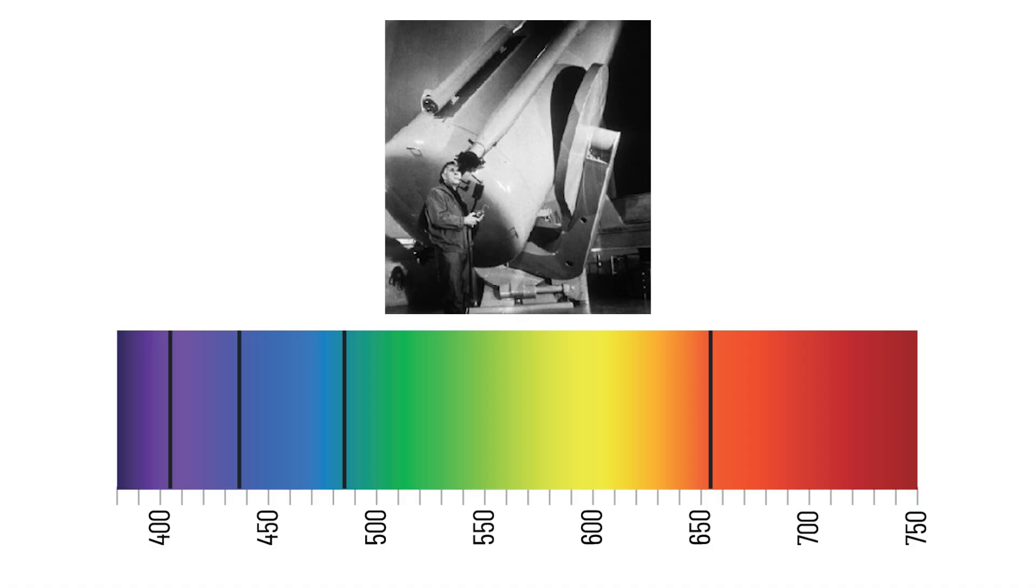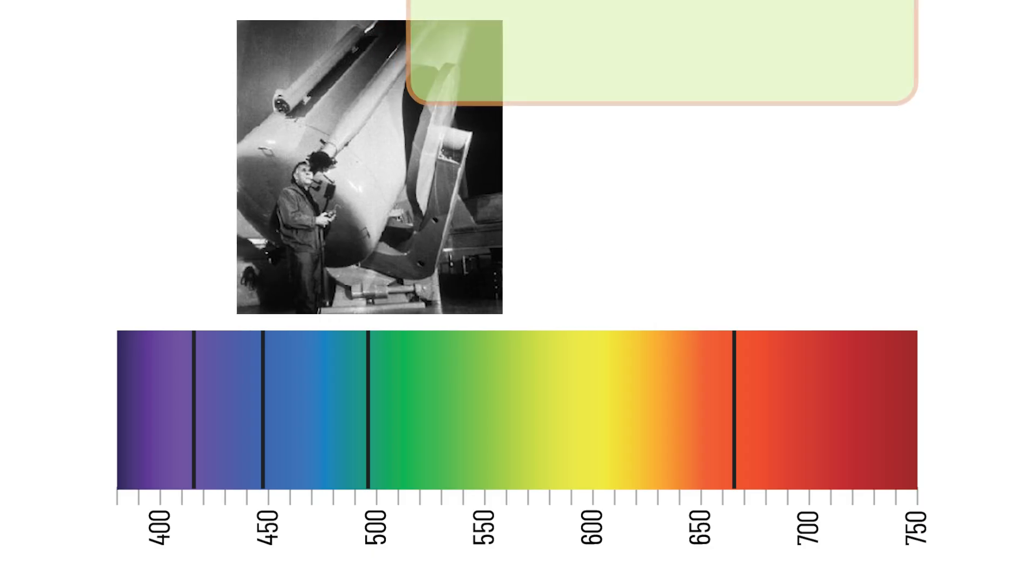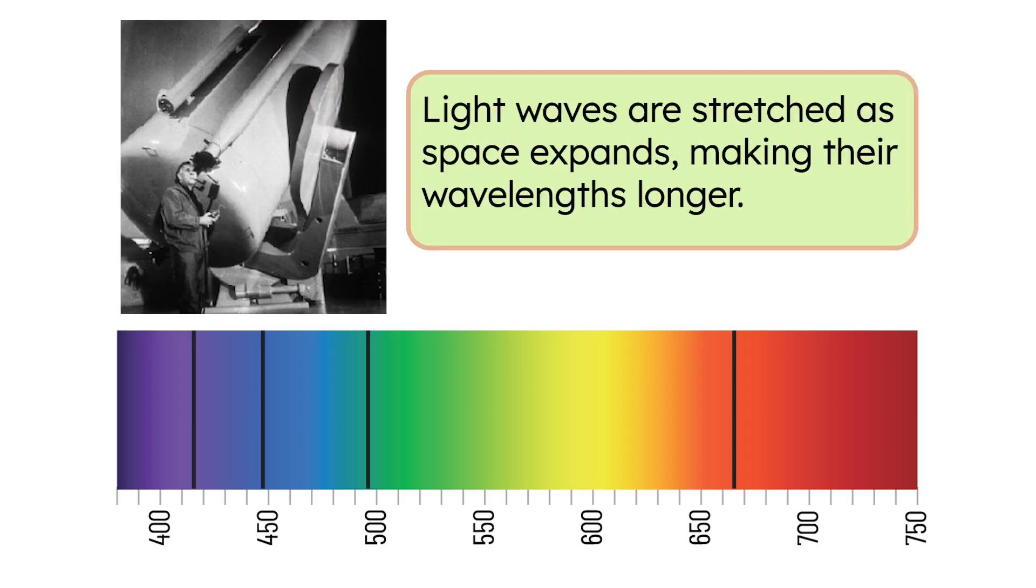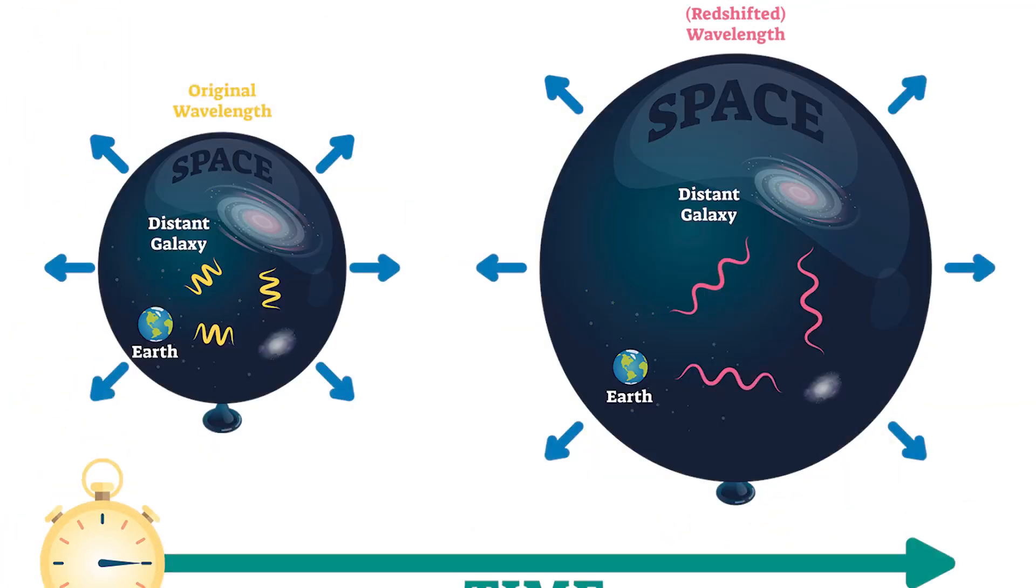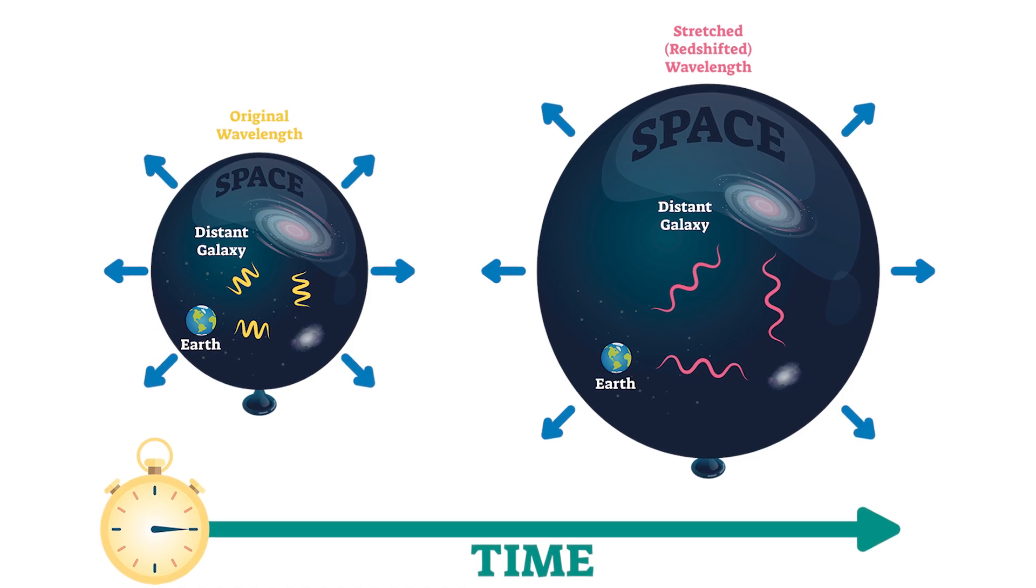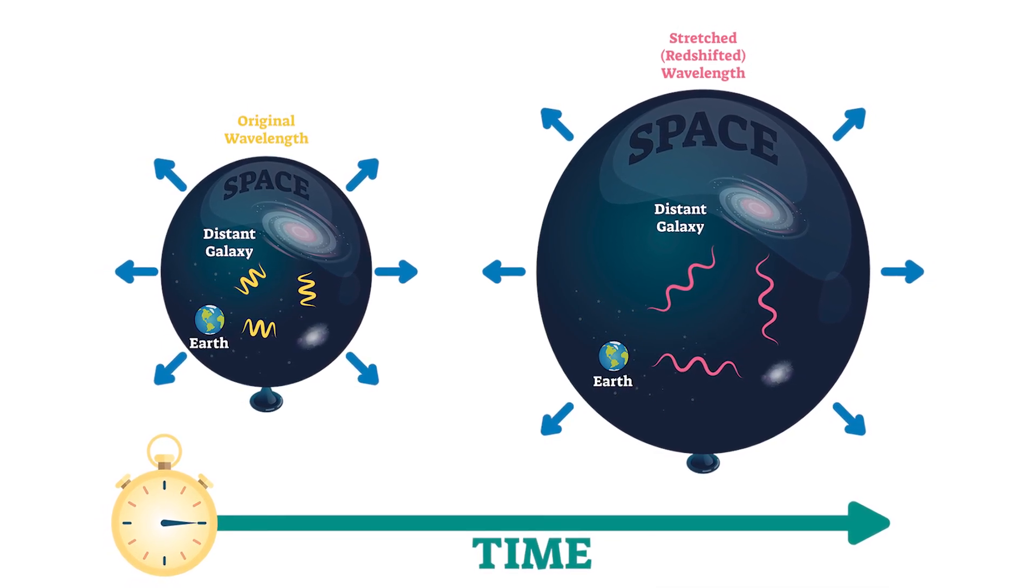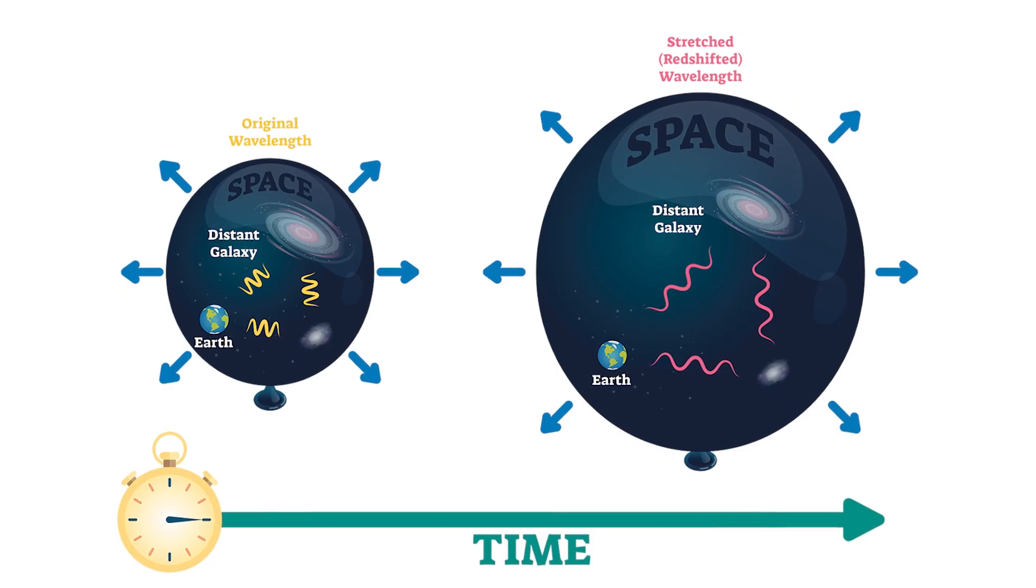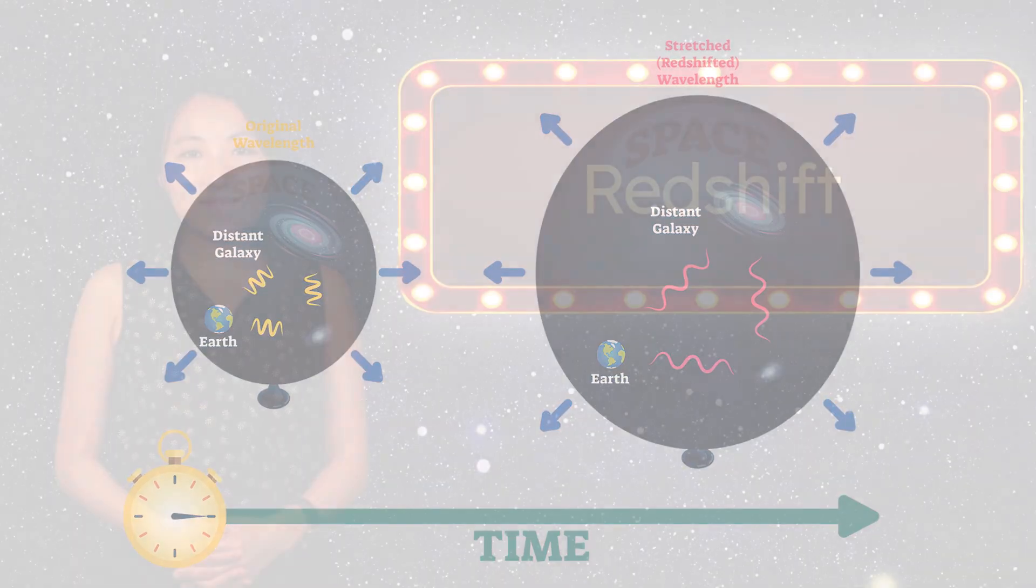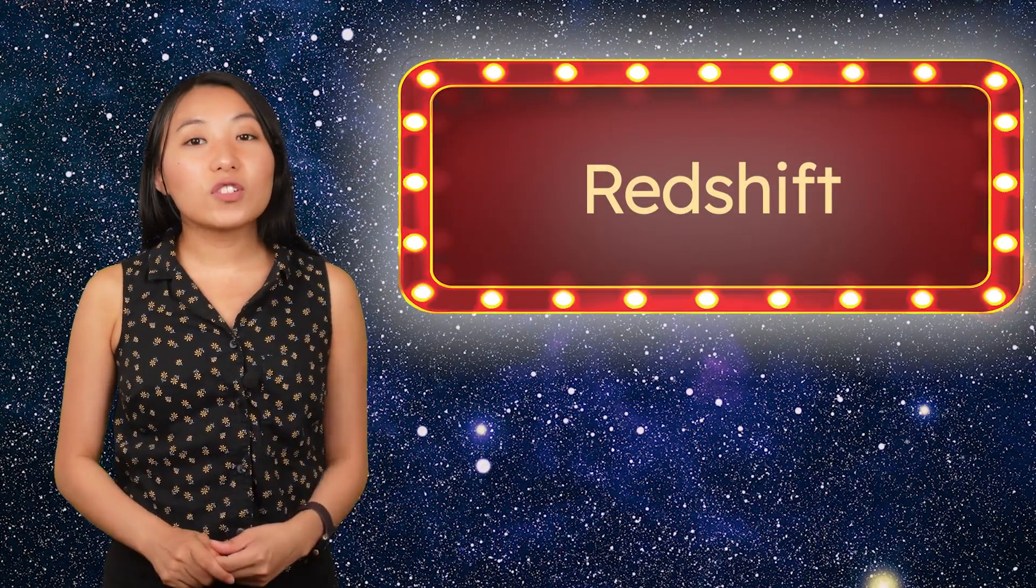For distant galaxies, those lines were shifted toward the red end or longer wavelength end of the spectrum. This shift happens because the light waves are being stretched as space expands, which makes their wavelength longer. If a light wave initially has a wavelength in the yellow part of the spectrum, it may look orange or red by the time it reaches us because it has been stretched out by the expansion of the universe as it travels. This stretching is called a redshift.